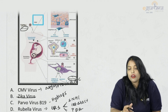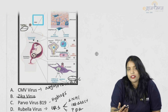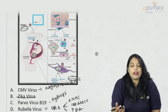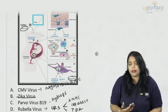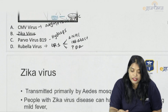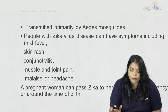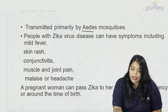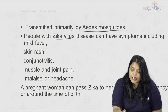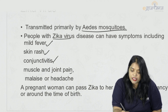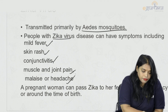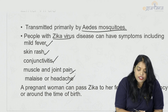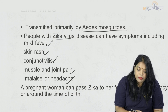Whenever a mother travels to an endemic area of Zika virus and gets infected, the mother usually has very few prodromal symptoms. But if she is a pregnant mother, she can develop problems. Zika is transmitted primarily by Aedes mosquito. People with Zika virus disease have symptoms including mild fever, rash, conjunctivitis, muscle and joint pain, malaise, and headache.